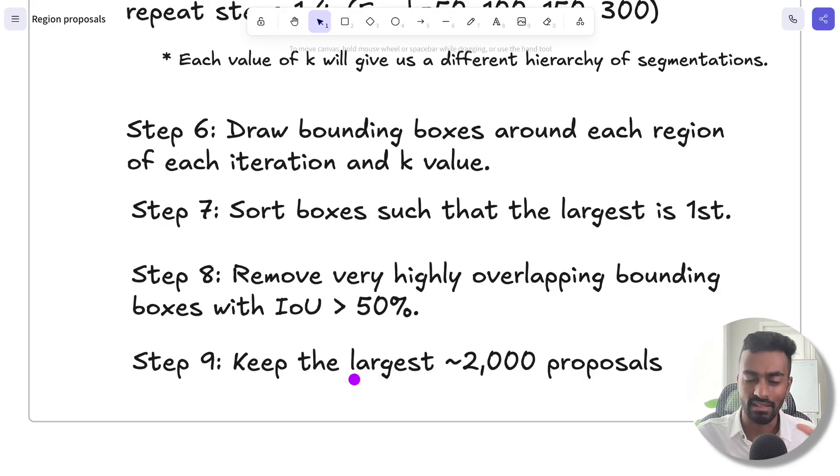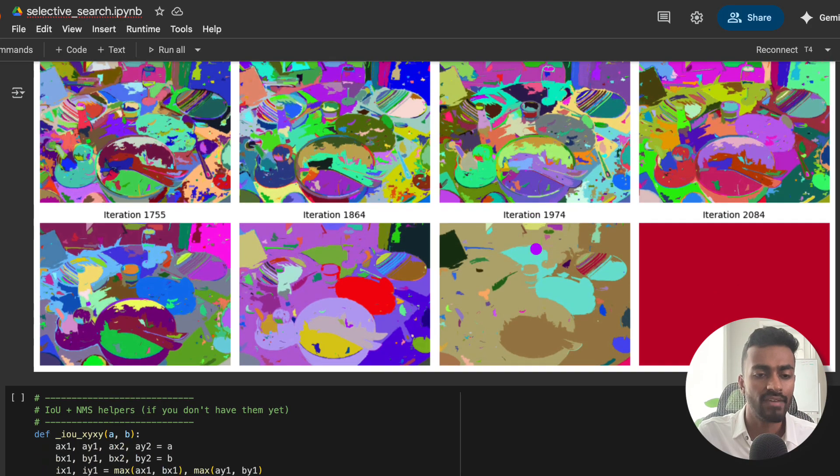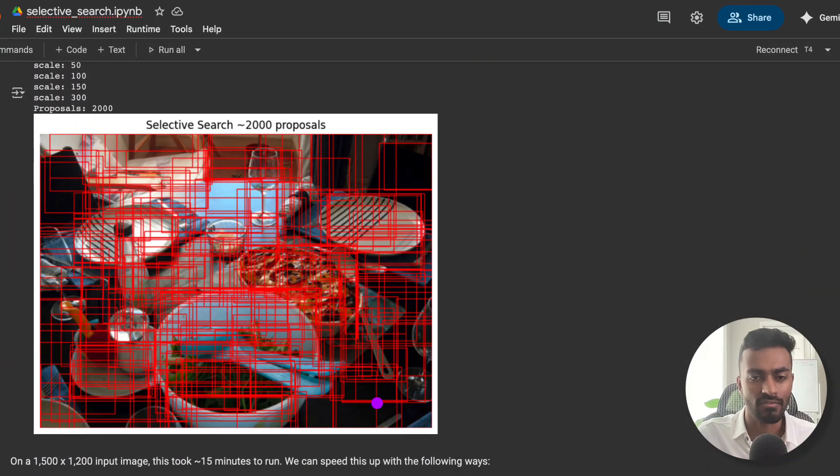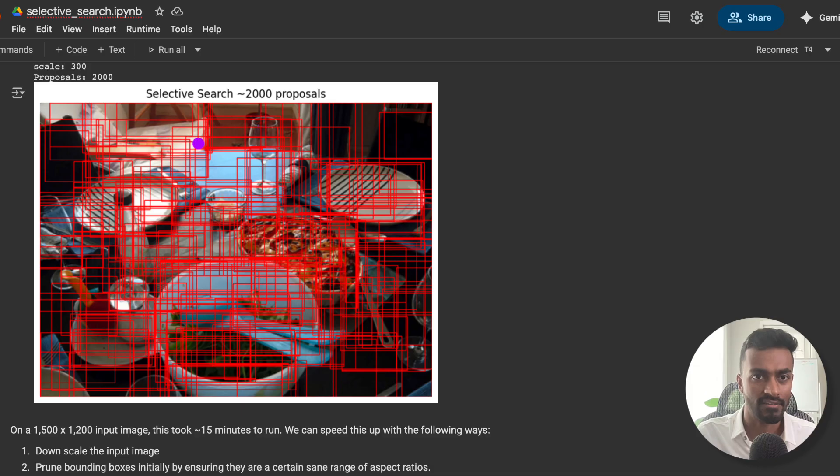And here we will only keep the largest 2,000 of these bounding boxes at the end to have 2,000 region proposals. And effectively, what that kind of looks like is this image over here, where we have 2,000 of these. Each of these red boxes is a region proposal, and that's all we have. We have 2,000 of these region proposals, and this can be used for further processing in object detection.